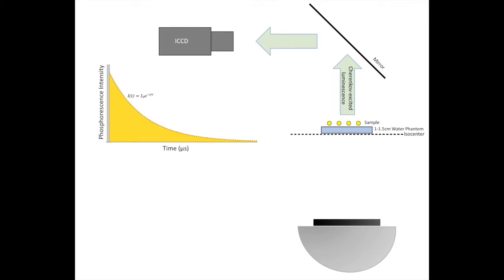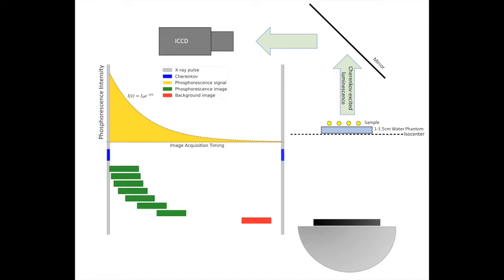In our case, phosphorescence intensity is quenched in the presence of oxygen. If we acquire images at specific times after the radiation pulse, we can estimate the phosphorescence lifetime.